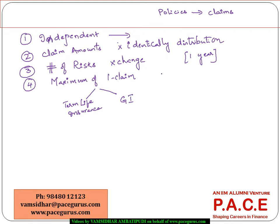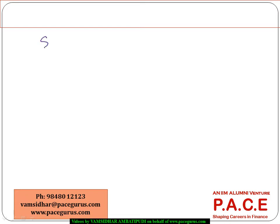This kind of model is more suitable for term life insurance policies, because the claim occurs at most once and after the claim has been made, the policy ceases to exist. It may not be applicable for the majority of general insurance policies, because there can be more claims in a general insurance policy in a year, and once the claim payment is done, the policy does not necessarily close. Now let's look at the aggregate claim amount S, with y1, y2, through yn, covering n risks altogether.